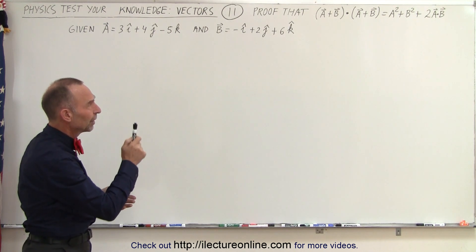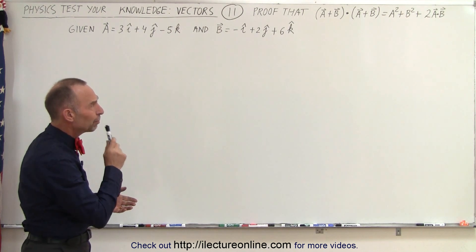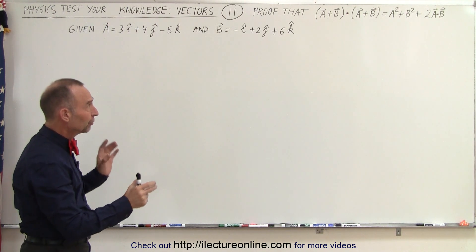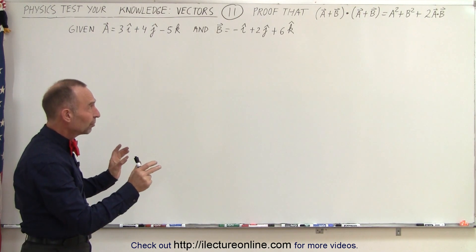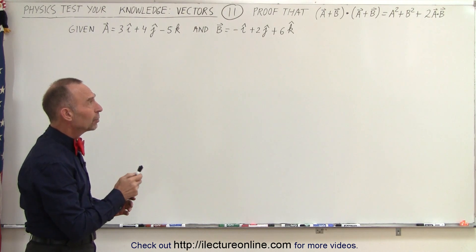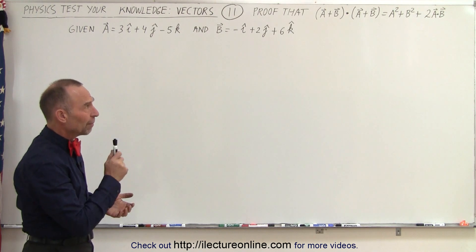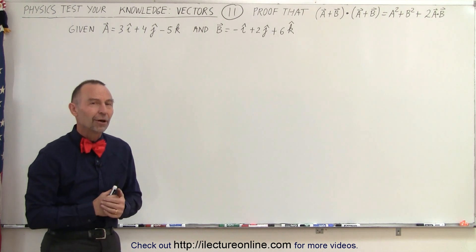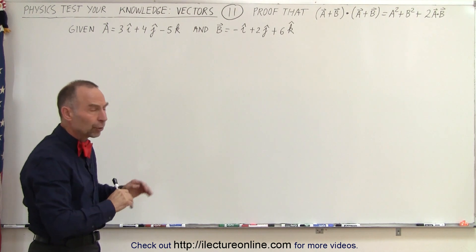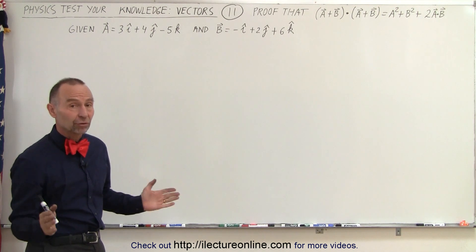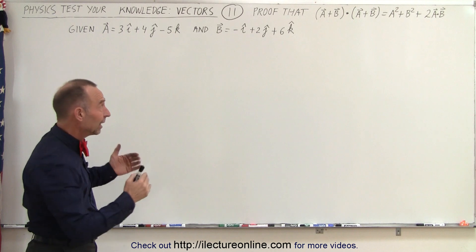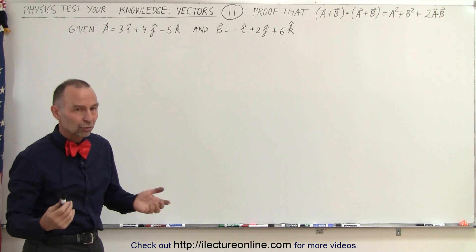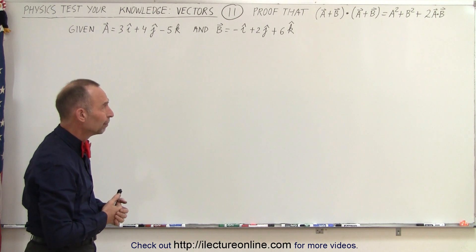Let's say that we're trying to prove that a plus b dotted with a plus b — the dot product of the two sums of a and b — should be equal to the magnitude of a squared plus the magnitude of b squared plus twice the dot product of a and b. We're going to do this in a general fashion first, and then we'll also show that yes indeed we can get the solution by taking two vectors like in this example.